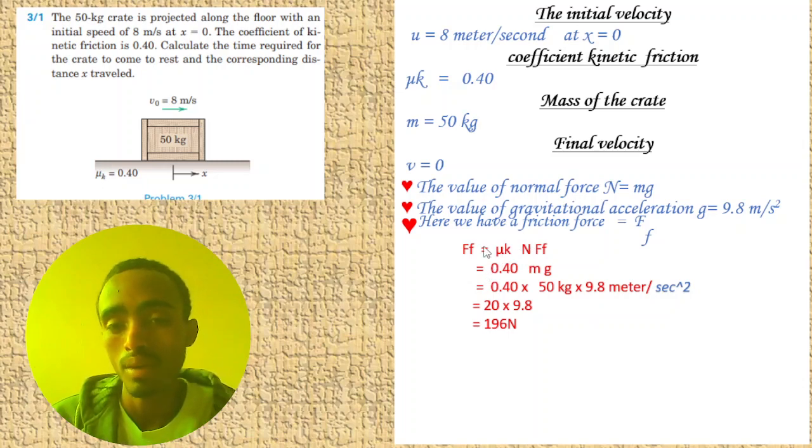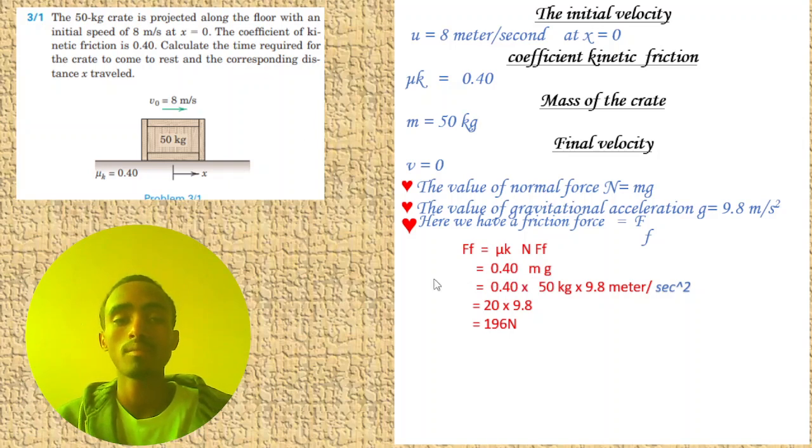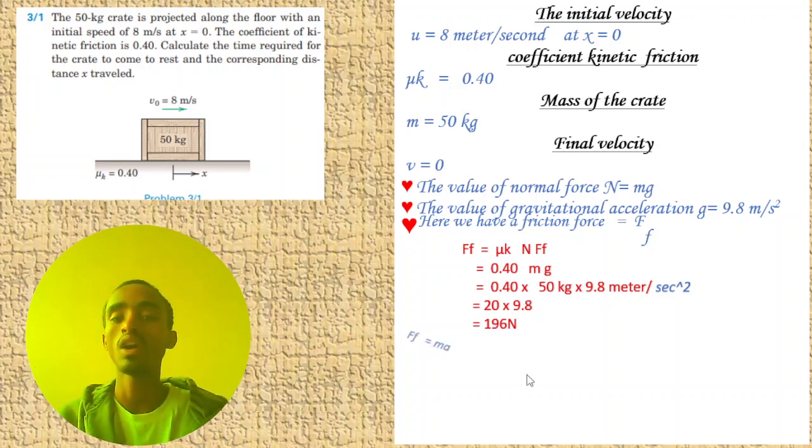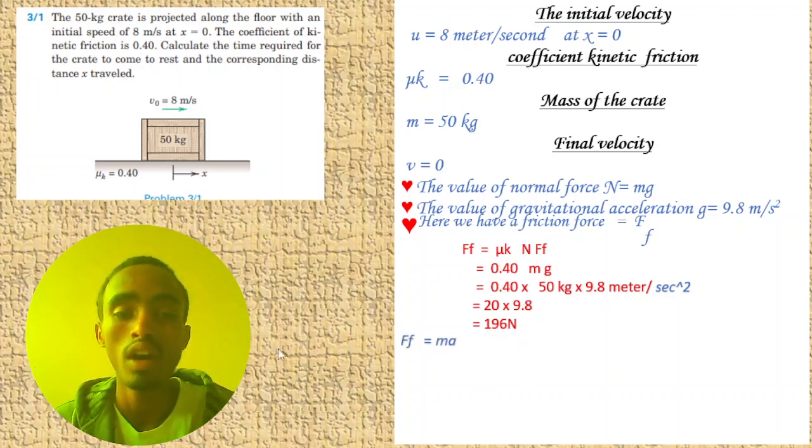Frictional force equals coefficient of friction times normal force. So f equals μk times N equals 0.4 times mass times gravity. This is 0.4 times 15 kg times 9.8 m/s². After solving, you get 58.8 Newtons.